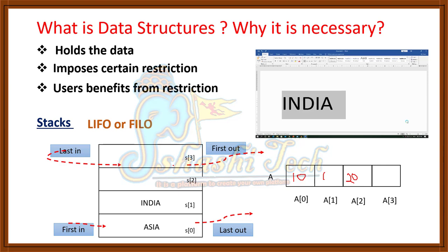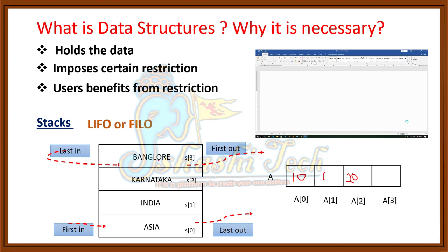As soon as you press Ctrl+Z, all the deleted text will be displayed on the screen in LIFO format. Whatever text you deleted last — Bangalore — will be displayed first after pressing Ctrl+Z. After that, Karnataka is displayed, then India, then Asia. It is following the LIFO principle: whatever text comes in last is retrieved first, and whatever comes in first is retrieved last. This shows it is a useful condition. The stack holds the data and imposes the restriction that it must follow the LIFO principle — last-in, first-out — and the user is getting a benefit from this restriction. Even after deleting, you can retrieve the text. This is a benefit.